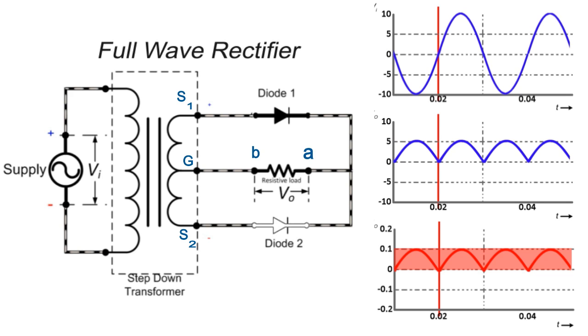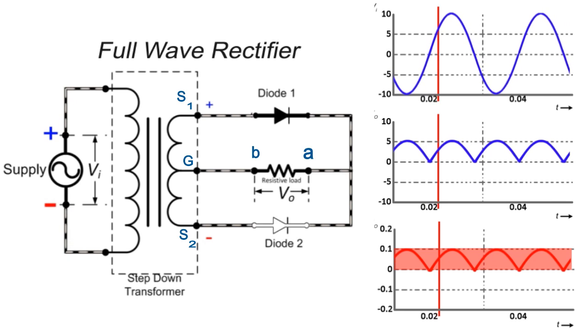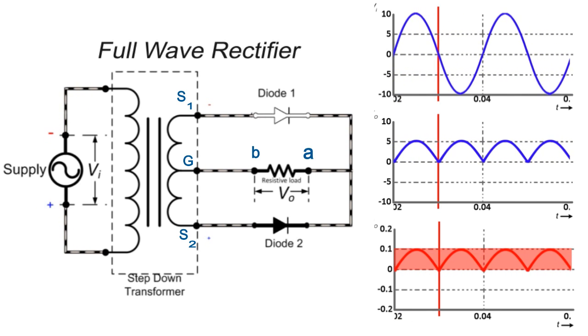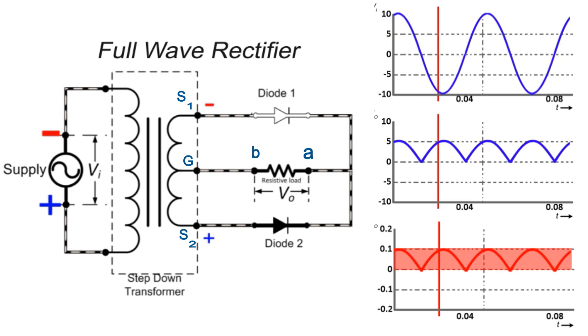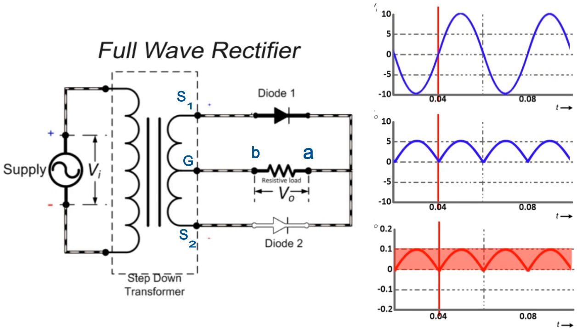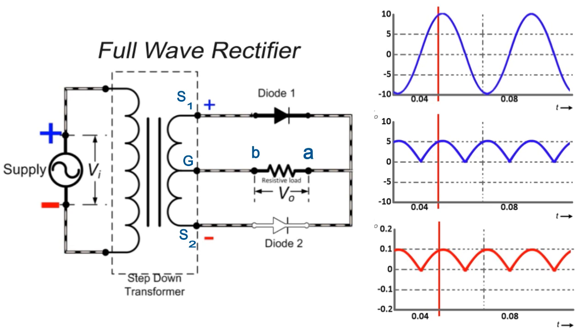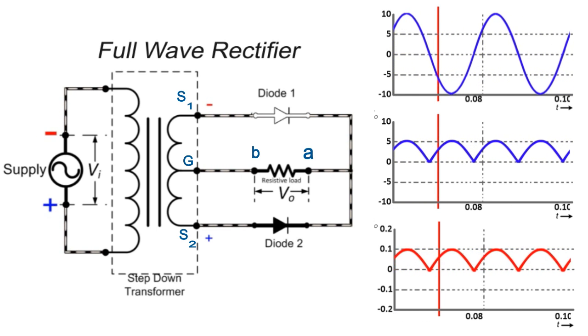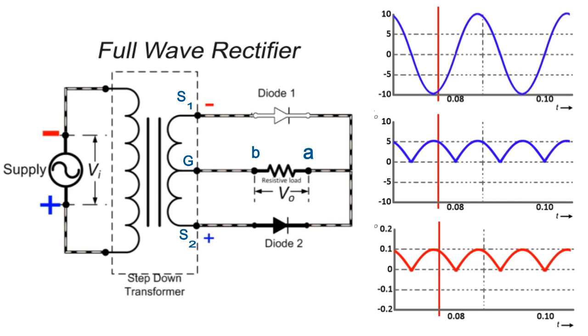When comparing the current flow in the positive and negative half cycle, we can conclude that the direction of the current flow is the same through load resistance R. So, in this way, full wave rectification is done by using center-tapped transformer and two diodes.